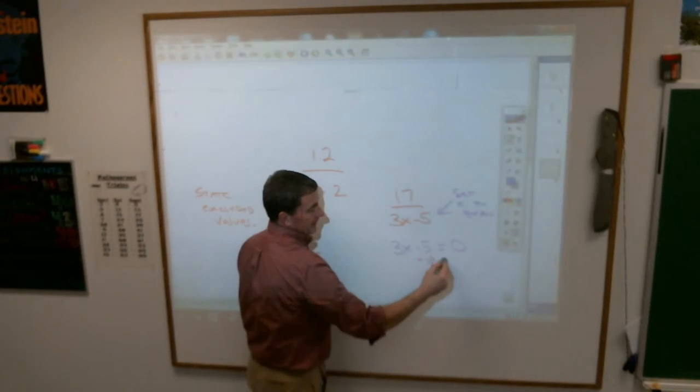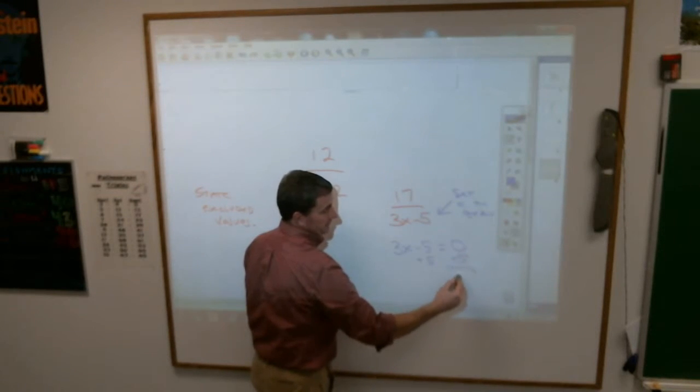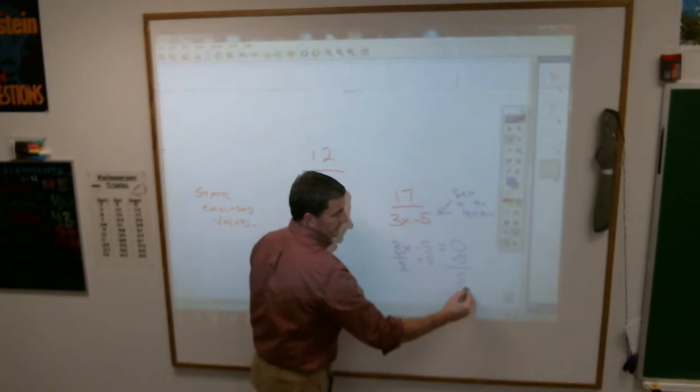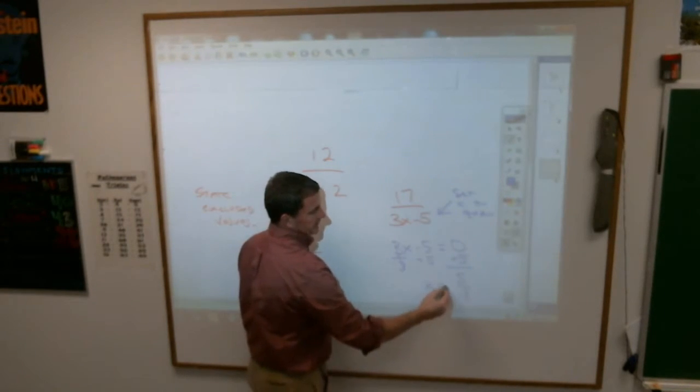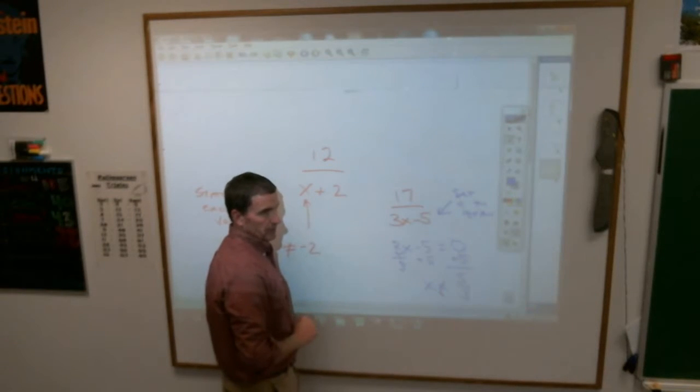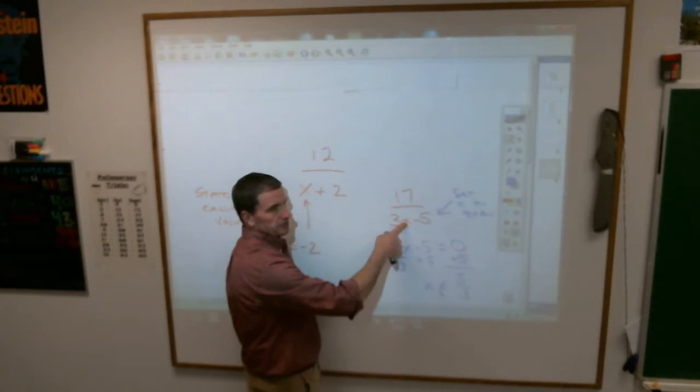I would add five, add five, divide by three, divide by three. You cannot let x be five-thirds, because if I put five-thirds in for x here, I'm going to get zero.